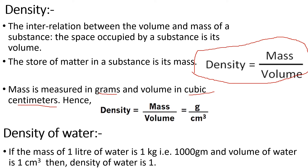Density of water. If the mass of 1 litre of water is 1 kg, that is 1000 grams, and volume of water is 1 centimetre cube, then density of water is 1.